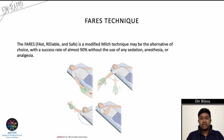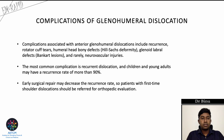Successful reduction of acute posterior shoulder dislocation without general anesthesia has been achieved using the Curitis method. Complications associated with anterior dislocation include recurrence, rotator cuff tears, humeral head bony defects, Hill-Sachs deformity, glenoid labral defects, and neurovascular injuries.